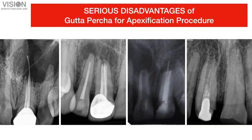For cases with wide open apices where walls are parallel or blunderbuss canals, gutta-percha cannot be used as a material of choice because a good apical seal cannot be achieved. Attempting lateral condensation in such situations carries a high chance of gutta-percha extrusion and a poor apical seal. Such situations warrant use of a different type of material — not gutta-percha — to create a proper and better apical seal.